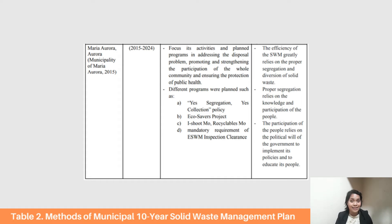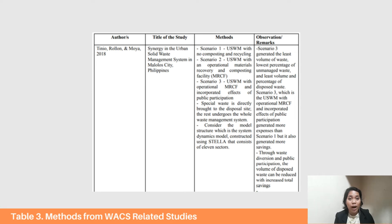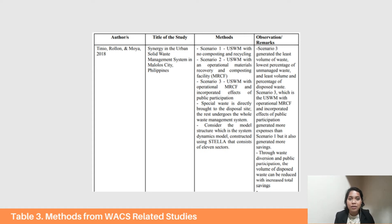The last set of methods are from WACS-related studies. In Malolo City, they used a method of creating 3 scenarios: Scenario 1 — utilizing urban solid waste management (USWM) without composting and recycling; Scenario 2 — USWM with an operational material recovery and composting facility (MRCF); and Scenario 3 — USWM with operational MRCF and incorporated effects of public participation. It was revealed that Scenario 3 is the most effective, producing the least volume of generated waste, lowest percentage of unmanaged waste, and least volume and percentage of disposed waste.